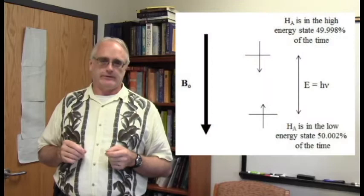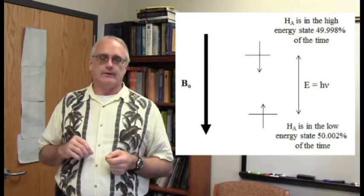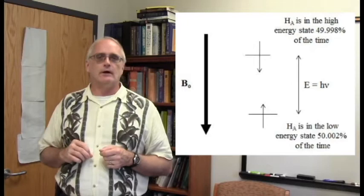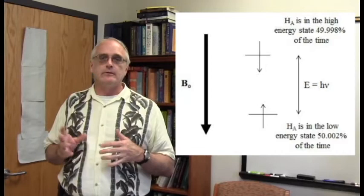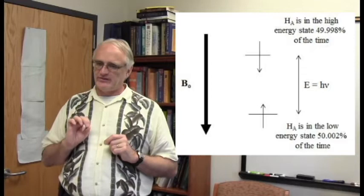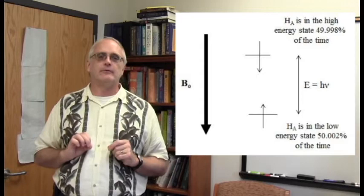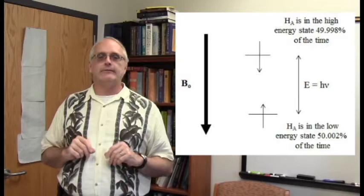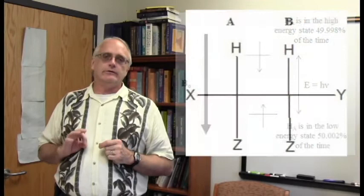Hydrogen A has available to it two spin states in the big external magnetic field: one aligned with and one aligned against the magnetic field, one slightly lower in energy than the other. The energy difference is subtle but we can probe it with photons — E equals h-nu, all that fun stuff. We also know those two states are nearly equally populated: just slightly over 50% in the low-energy state, slightly under 50% in the high-energy state.